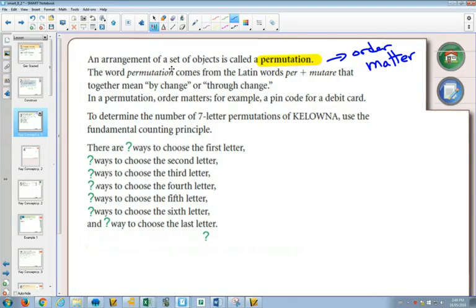So if you are going to rearrange the letters of Kelowna that they have here, basically what you have is you have one, two, three, four, five, six, seven letters. So you have seven decisions to make.